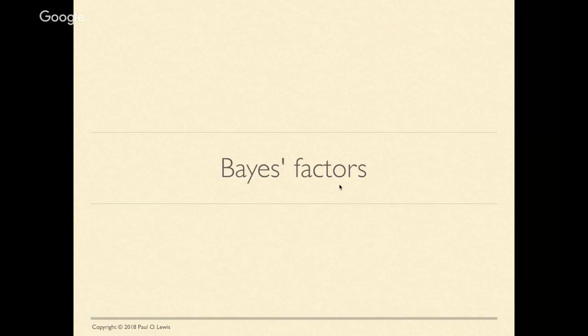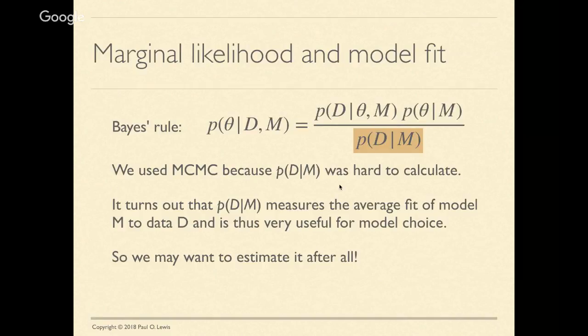That's the end of the discussion on priors. Now I want to spend time on Bayes factors and how they're used. Bayes factors are built from marginal likelihoods. First I'll talk about how to estimate a marginal likelihood, then how those go into computing a Bayes factor, and intuitively why calculating marginal likelihoods helps us decide which model is best in a Bayesian context.